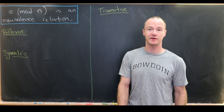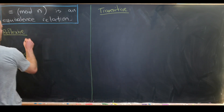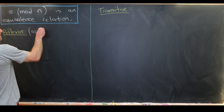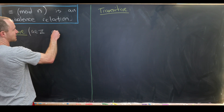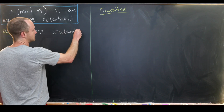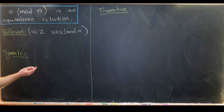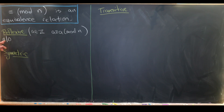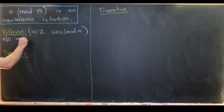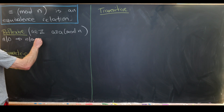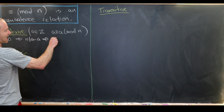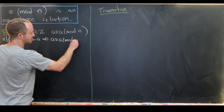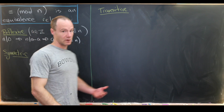So let's start by showing that it's reflexive. That means what we want is for all integers a, a is congruent to a modulo n. That's fairly quick — that's because n divides 0, since 0 can be written as 0 times n. So n divides 0, which means n divides a minus a, and that's exactly the condition for a to be congruent to a mod n.